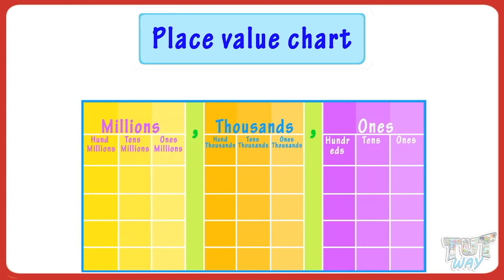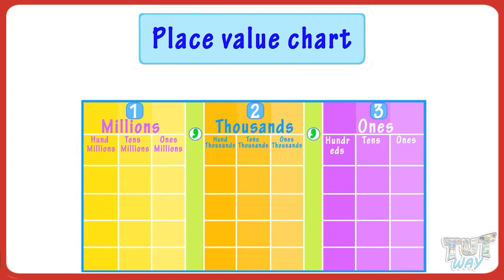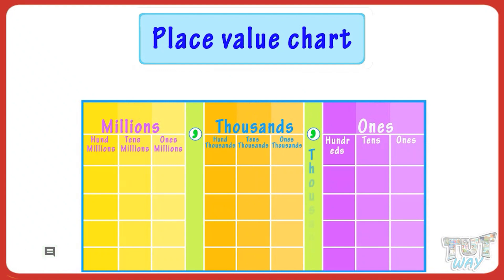Our numbers are divided into three-digit groups called periods. Each period is separated by a comma. Each comma has its own name — Thousands, Millions.